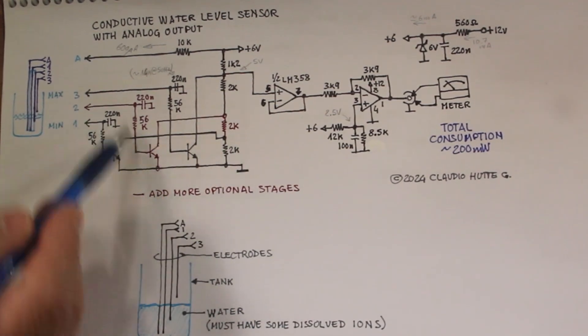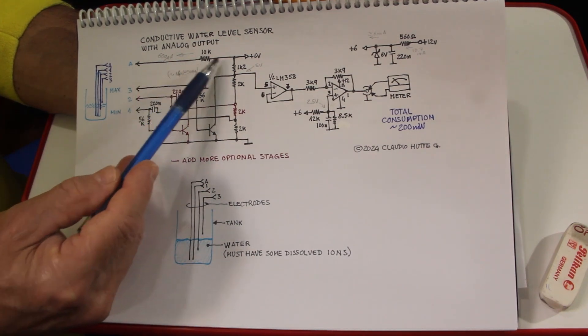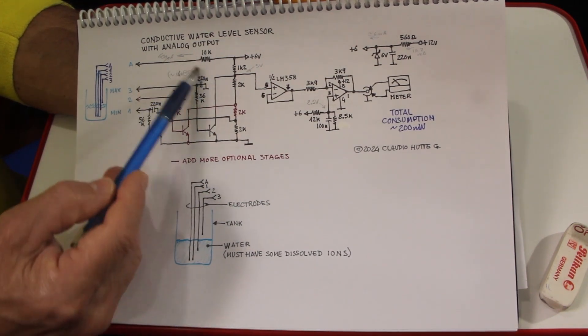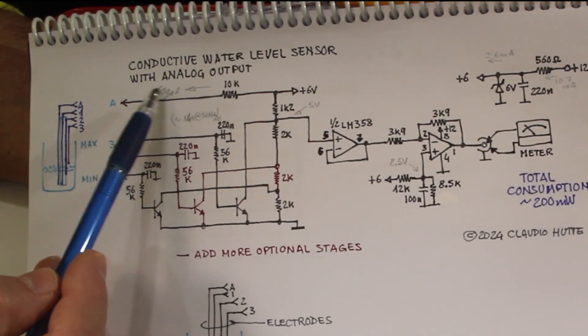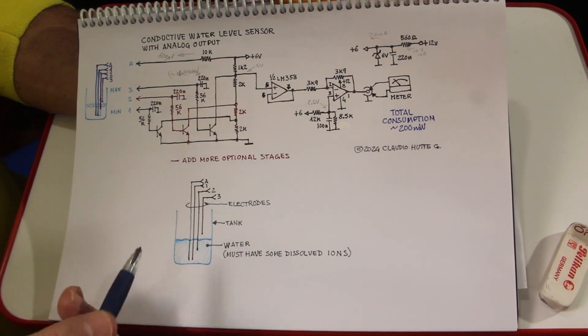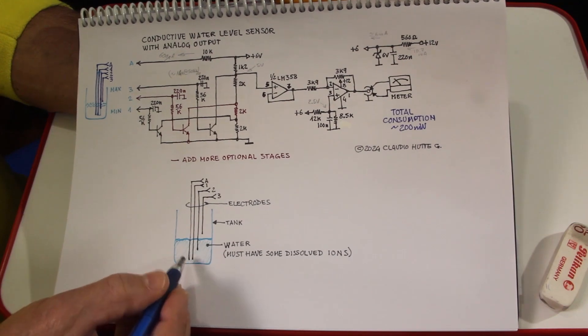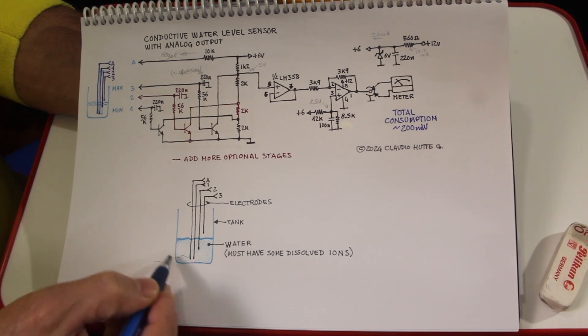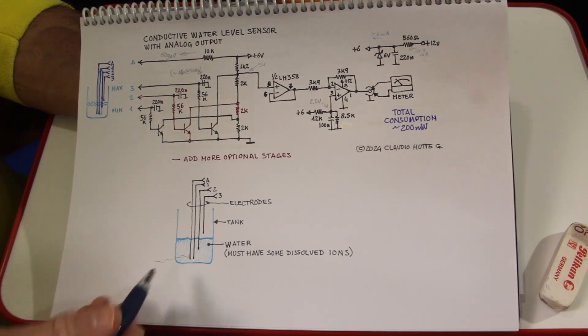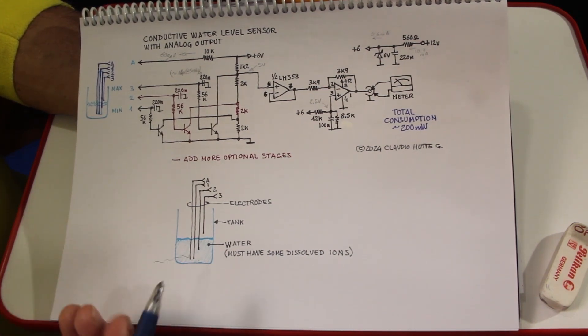Here the common electrode is supplied through this 10k resistor, that limits the current at 600 microamps. And this limits the risk of buildup of scale or corrosion or even leakage through the water or the tank or other elements connected through water. Maybe pipes, etc.